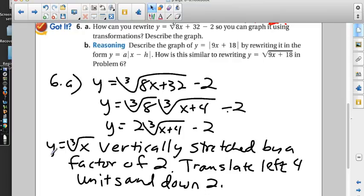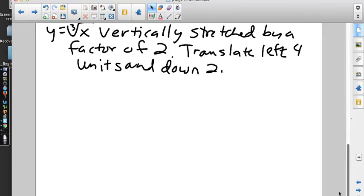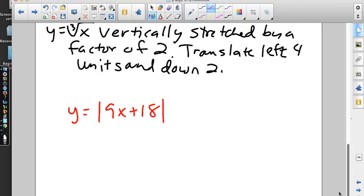Now part b - look what they just did, they switched gears on us. It says describe the graph of y = |9x + 18| by rewriting it in that form. How is that similar to y = √(9x + 18)? Well, let's talk about that one. We can do that stuff. Do we know what the absolute value of 9 is? It's 9.